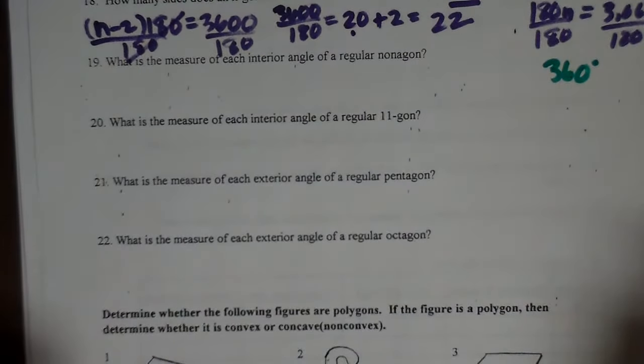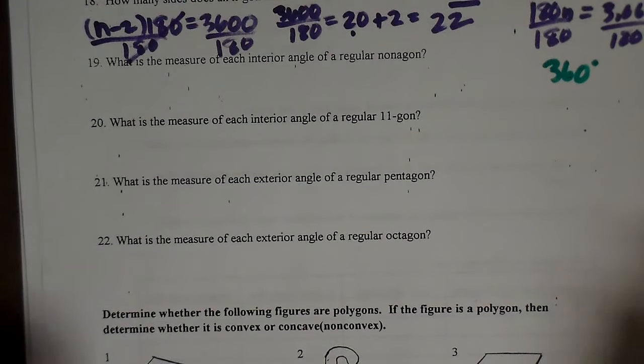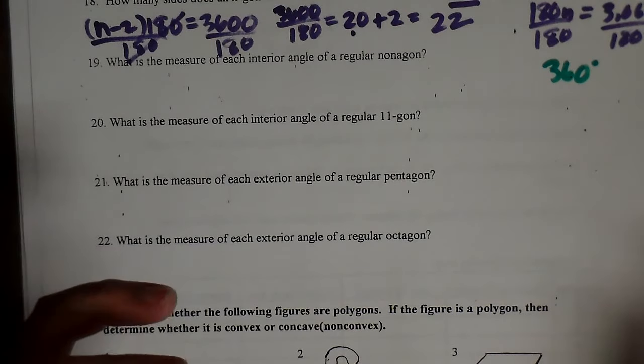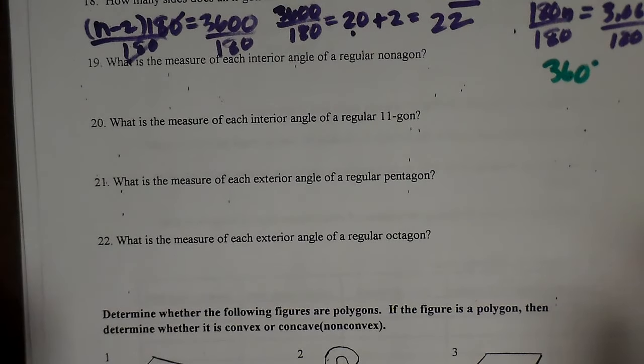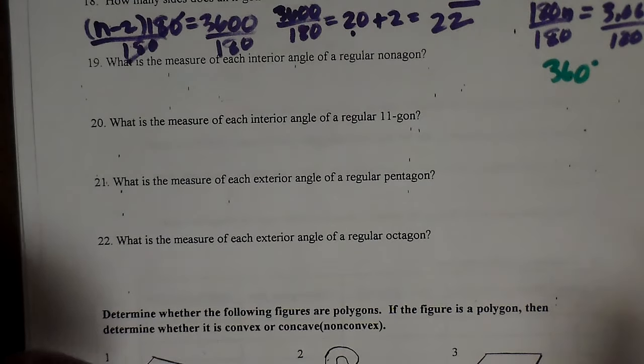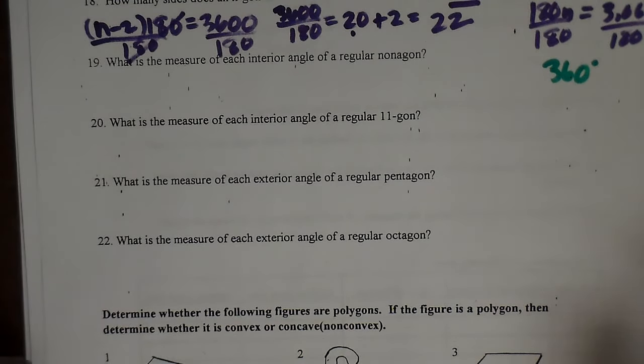Just like the interior angle sum is n minus 2 times 180, but it changes. I shouldn't have said always. The interior angle sum is variable. It's n minus 2 times 180. It depends on the number of sides. The exterior angle sum is always 360.